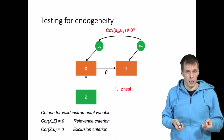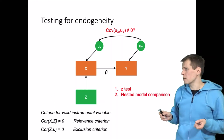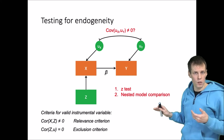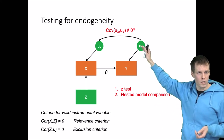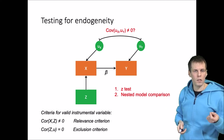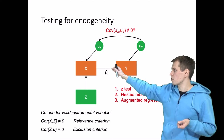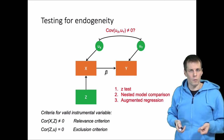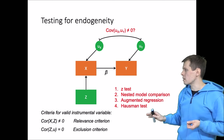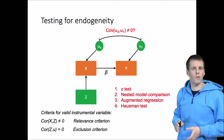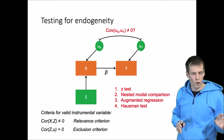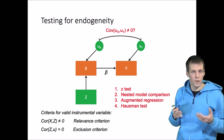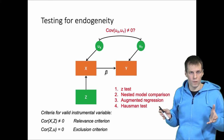Then we have three other, more complicated tests. The first is a nested model comparison where we compare two models — one is the instrumental variable model, another assumes no endogeneity by constraining the error correlation to zero, and then we compare the models. The second is an augmented regression model where we take the residuals from the first stage regression, use them as a predictor of Y, and if those predict Y we conclude there is an endogeneity problem. The third is the general Hausman specification test, which compares an efficient estimator — normal regression — against a consistent estimator — instrumental variable — and checks if those are sufficiently different to conclude that one of the estimators must be inconsistent.